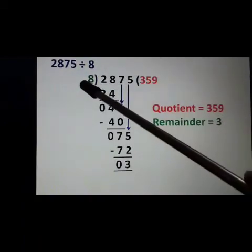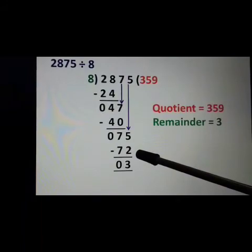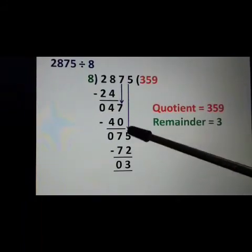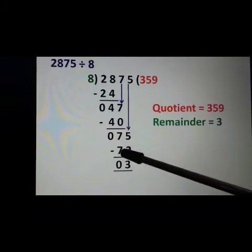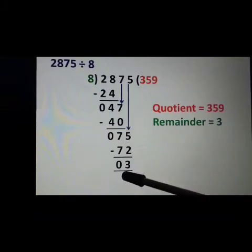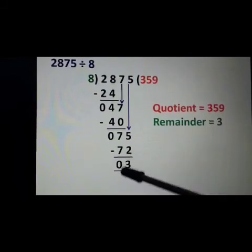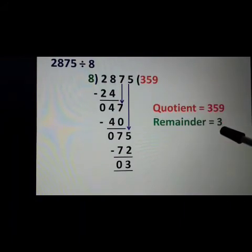Say the table of 8: 8 nines are 72. We will subtract: 5 minus 2 is equal to 3 and 7 minus 7 is equal to 0. So our quotient is 359 and our remainder is 3.